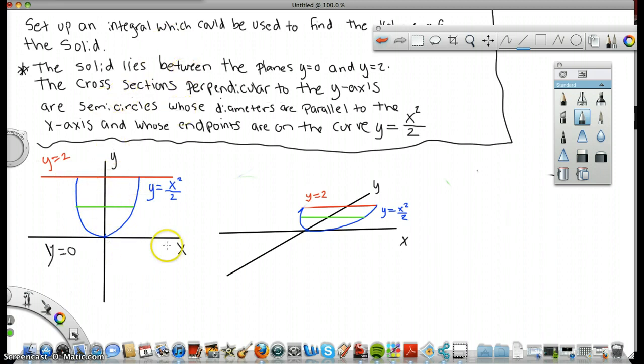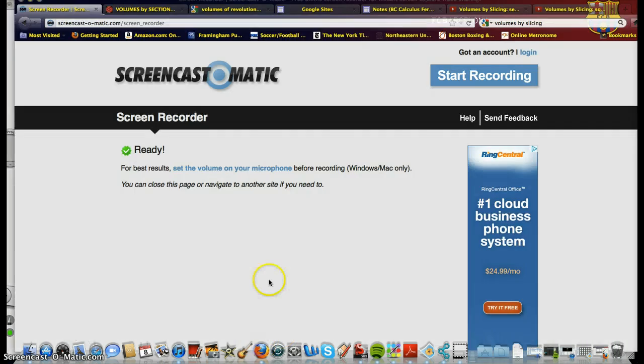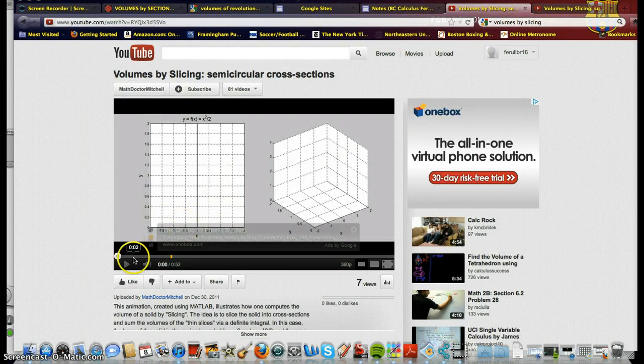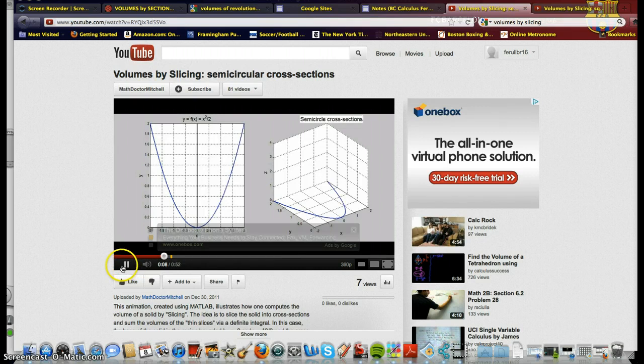In terms of a visual of what this object looks like, I have a, I found a video so we can look at it. Here it is. So they're going to trace the graph. The left here is just the x-y plane. The right, we're in three dimensions. Okay, the x, y, z coordinate. So there's our graph, x squared over two.